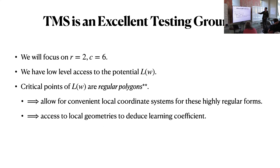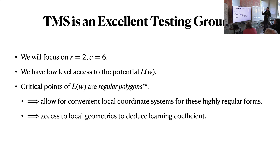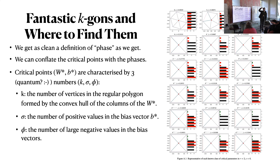We'll focus on R=2, C=6. We can do all of that for TMS. The critical points are regular polygons. We actually have English descriptions of what the critical points are — asterisk asterisk, because it's not as simple. Because of the highly structured form of these critical points, we can actually have local coordinates so that we can compute the RLCT. There's a lot of hard work that John Tiang, one of the authors, has meticulously calculated. For R2C6, these are the critical points we have found.